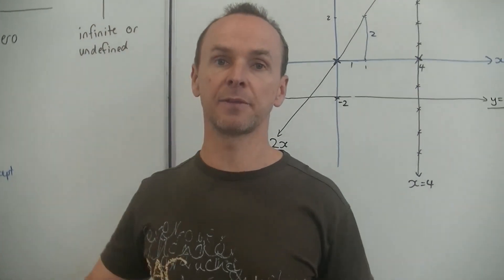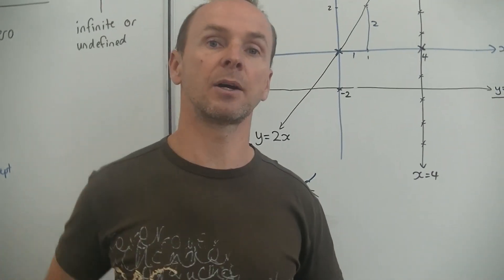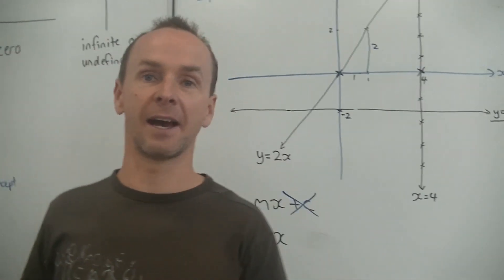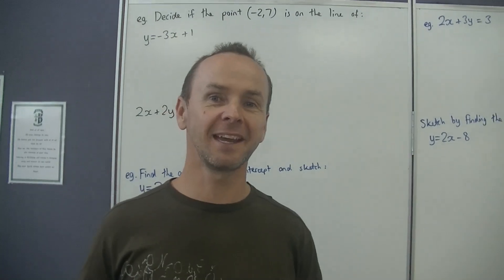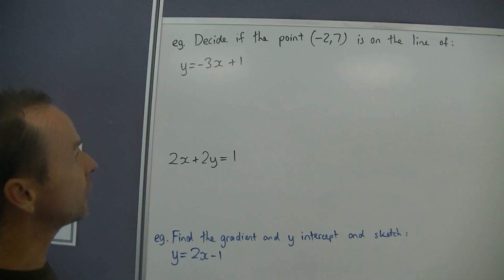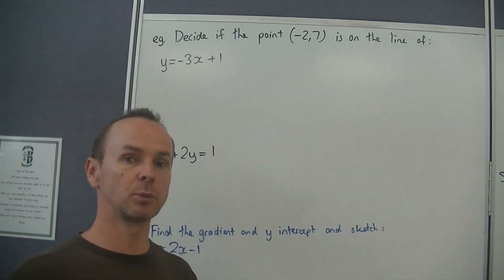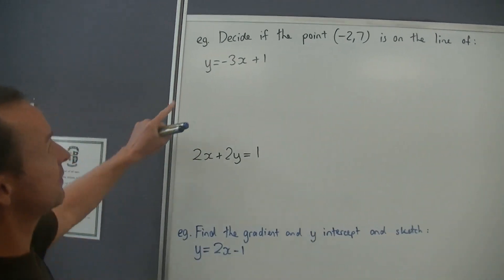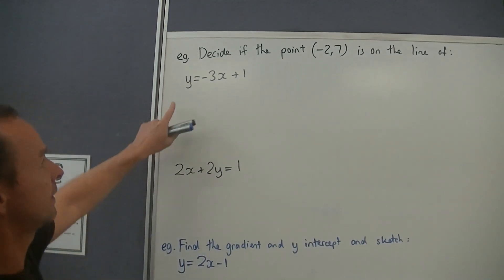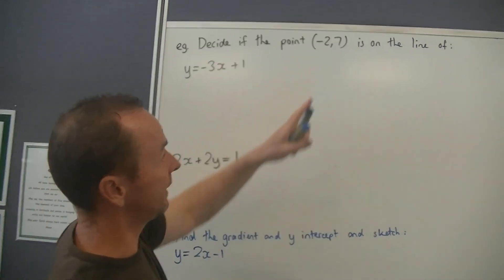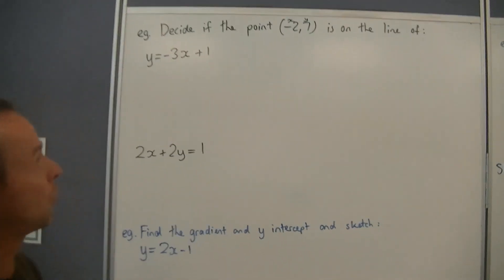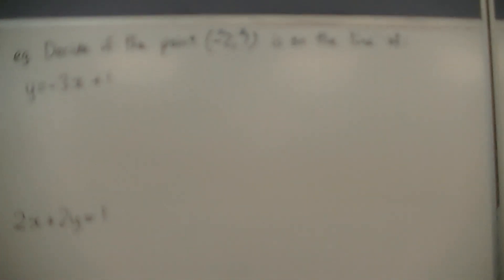I'm going to stop the theory there and do some questions you need to know. The first question people always get stumped on — they're generally multiple choice questions. It says: decide if the point negative 2, 7 is on the line of this equation. The way we do that is: negative 2 is the x coordinate, and 7 is the y coordinate. So the point is x equals minus 2 and y equals 7.